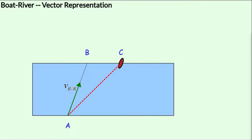If there was no current in the river, then the boat would have ended up at B, but due to the river current, it ends up at C.